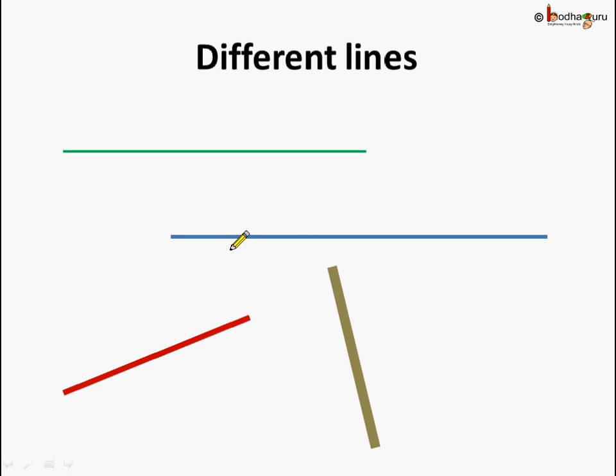So, we can say a line is straight without any curves and a line has no thickness and a line can be extended in both the direction without any end. That is, it can be extended infinitely or we can say a line has no ends.